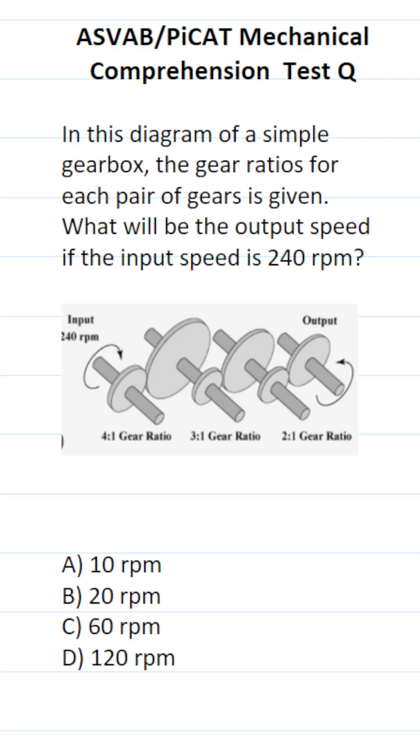This ASVAB PiCAT Mechanical Comprehension Practice Test question says in this diagram of a simple gearbox, the gear ratios for each pair of gears is given. What will be the output speed if the input speed is 240 RPM?